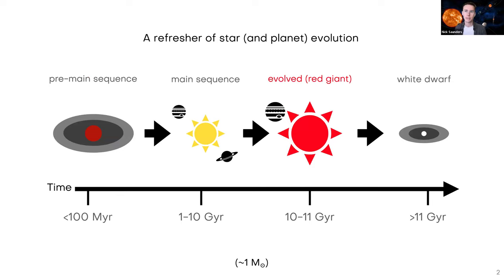Just to set the stage, I'll give a very quick crash course on stellar and planetary evolution. You start with a big cloud of gas and dust that collapses down into a disk. In the center of that disk you have your young star forming, and then gradually in that disk planet formation starts to occur. The material left over after planet formation gets blown out of the system, and you end up with a main sequence star with a handful of planets orbiting it. For a star with about the mass of the sun, this phase will last about 10 billion years.